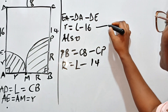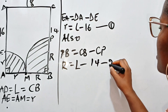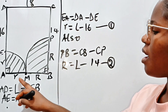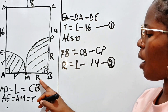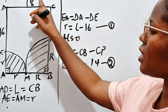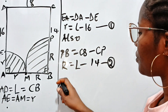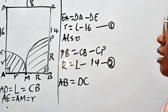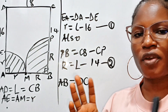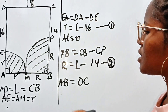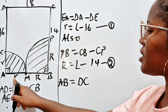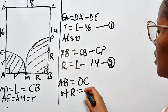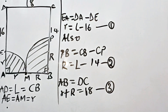Now if we call equation one r equals L minus 16, and equation two R equals L minus 14, we note that small r plus capital R also equals 18, because AB equals DC — they are opposite sides of the rectangle and therefore equal. So r plus R equals DC which is 18. Let's call this equation three.